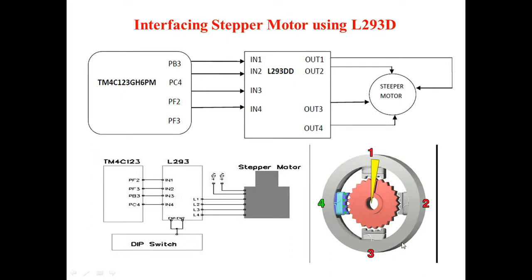This is the diagram for the stepper motor. The stepper motor's windings are called the stator and rotor. The stator has four connection lines: 1, 2, 3, and 4. The rotor has steps, so it rotates step by step. We have to control the angle for each step, and based on the step, the motor will rotate.